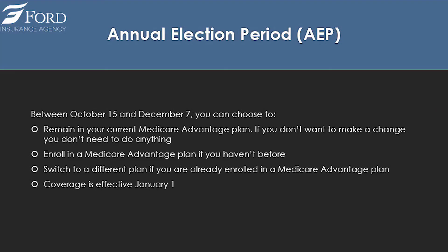Another time to enroll in Medicare Advantage is during the Annual Election Period (AEP), from October 15th through December 7th. You can choose to remain in your current Medicare Advantage plan — if you don't want to make a change, you don't need to do anything. Or you can enroll in a Medicare Advantage plan for the first time, switch to a different plan, or move from company to company. Coverage starts on January 1st.